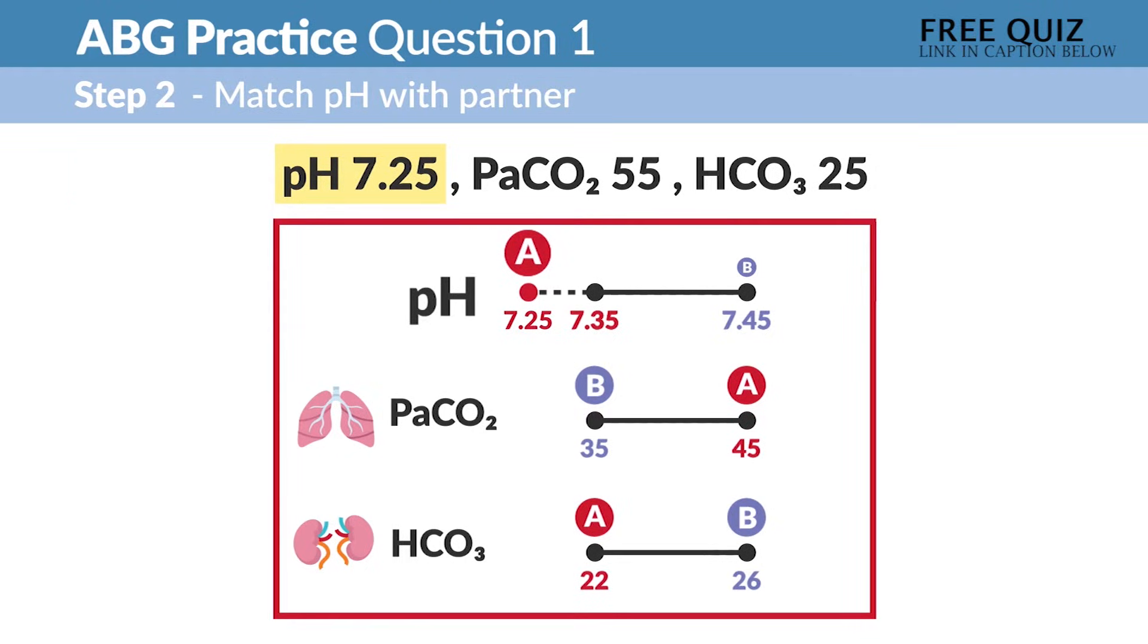Step two: we have to find the match on the bottom. Does CO2 or HCO3 have that acid match? Well, CO2 is 55, which is over that 45, so that's the acid. We got an acid match in the lung area.